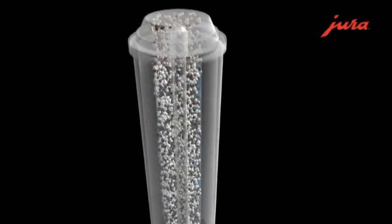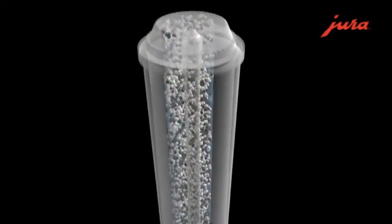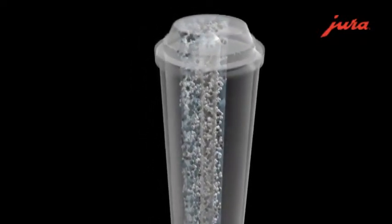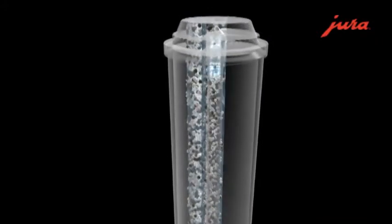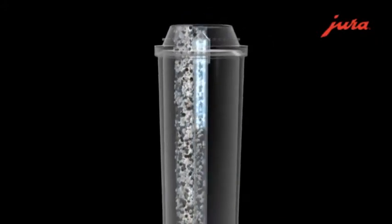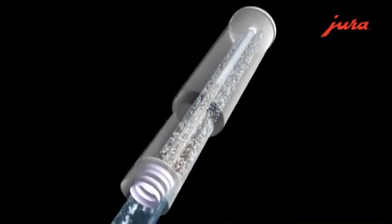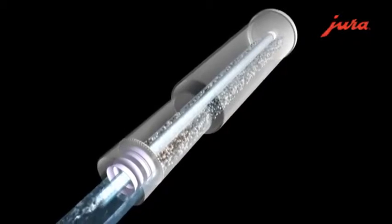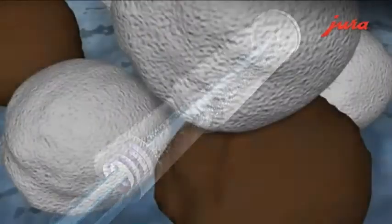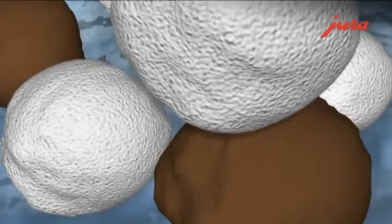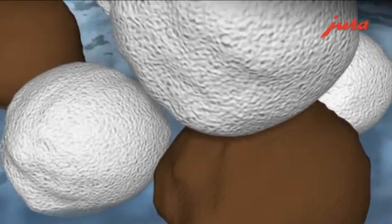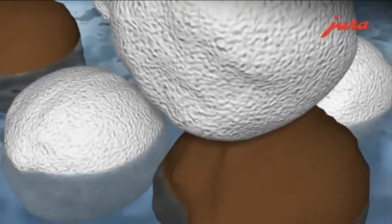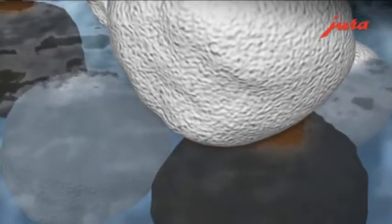The Claris Plus filter cartridge is based on the flow-up principle. During the coffee-making process, the water is drawn in and rises upwards through the filter. As a result, you always have exactly the right quantity of freshly filtered water required for your coffee. You never end up with stagnant, previously filtered water where bacteria can breed.